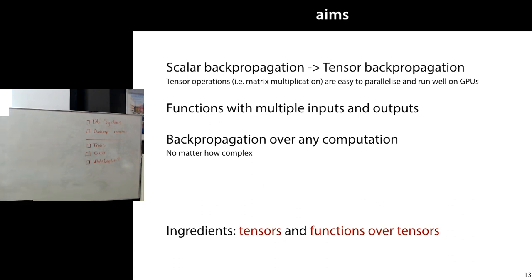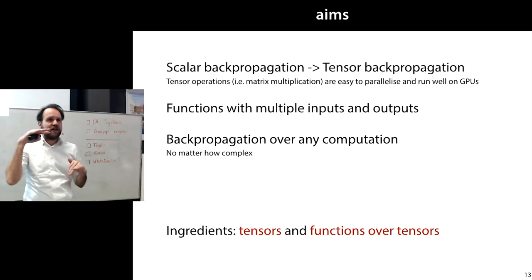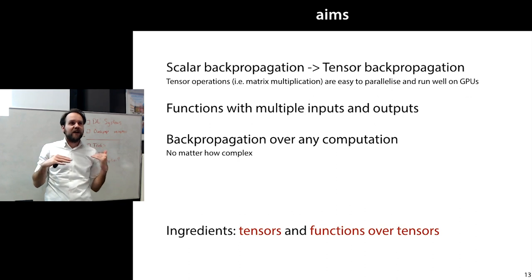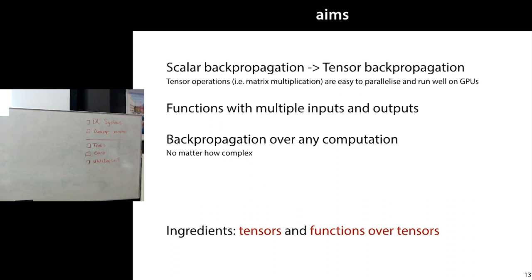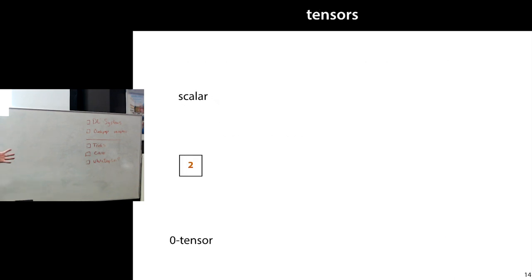The aim for the first part of this lecture and for building our deep learning system is to move from scalar backpropagation to tensor backpropagation. We want to build functions not of numbers but of tensors, with multiple inputs and outputs. Over any way we chain these computations together, we want to be able to do backpropagation, and we want the system to do the backpropagation for us.